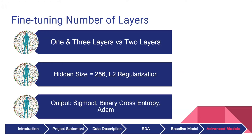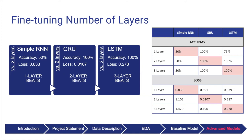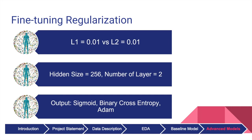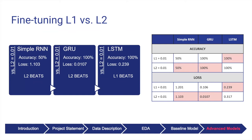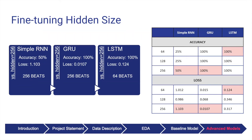We tried 1 versus 2 versus 3 RNN layers while keeping other hyperparameters fixed. In the simple RNN model, one layer performed best in terms of highest testing accuracy and lowest testing loss. Two layers performed best in the GRU model, and three layers performed best in the LSTM model. For regularization, L2 works better in the simple RNN and GRU models, while L1 regularization works better in the LSTM model. For hidden size, 256 units works better in the simple RNN and GRU models, while 64 units works better in the LSTM model.